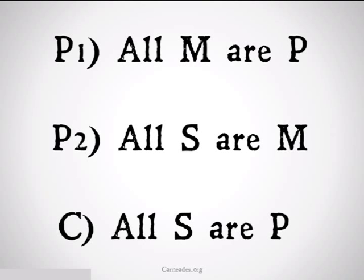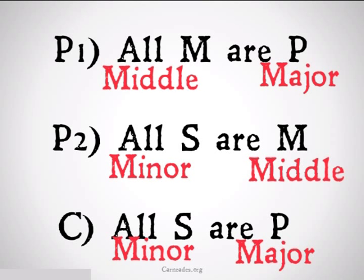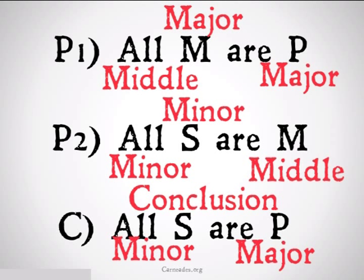Similarly, we're going to represent these with S, P, and M — M being the middle term, P being the major term, and S being the minor term. The premise that has P and M should always go first as your major premise. The premise that has S and M should always go second as your minor premise. And the statement that has S and P is not a premise at all — it's your conclusion, and it should come third in your categorical syllogism.